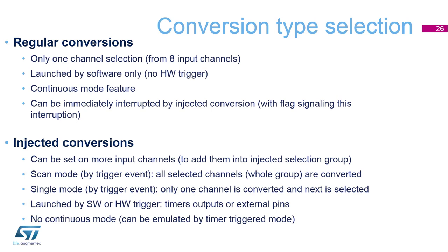Regular conversions have lower priority and can be interrupted by an injected conversion. If the regular conversion was interrupted, it is restarted once the injected conversion is finished, and this interruption is flagged. Regular conversions can be launched only by software and there is no scan mode available. They can run in continuous mode with no channel switching and can be performed in fast mode without filter refill. Regular conversions are used for measurements where timing is not critical, for example measuring temperatures or slow signals, and are also typical for continuous conversions from one channel only, such as audio or energy measurement applications.